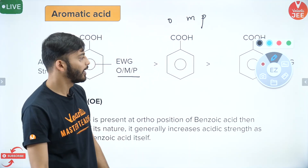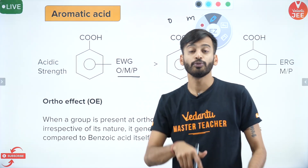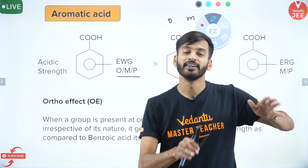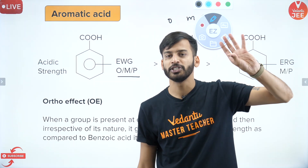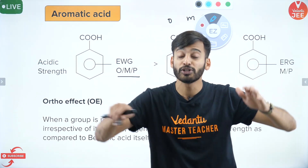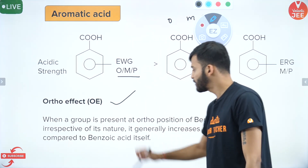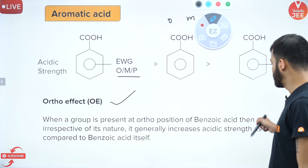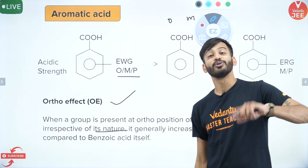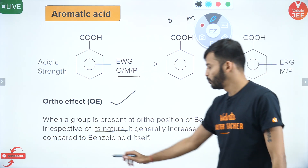We saw that if an electron releasing group is present at meta and para, the acidic strength decreases. But if it is at ortho position, even an electron releasing group is there, acidic strength is going to be more. That is nothing but the ortho effect — when a group is present at the ortho position of benzoic acid, irrespective of its nature, whether electron releasing or electron withdrawing, it generally increases acidic strength.